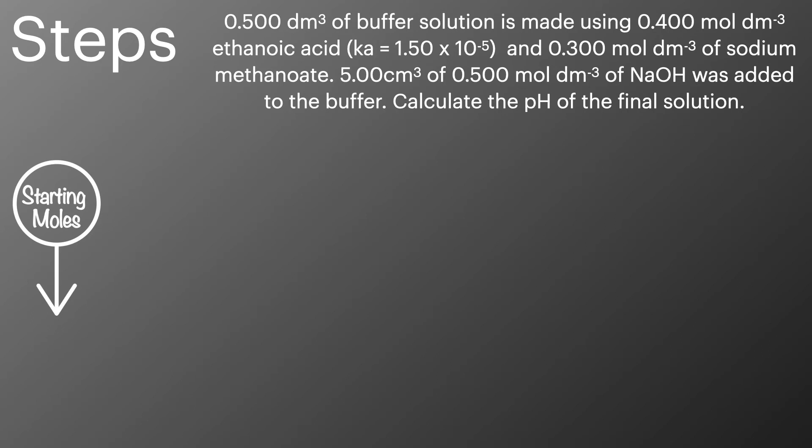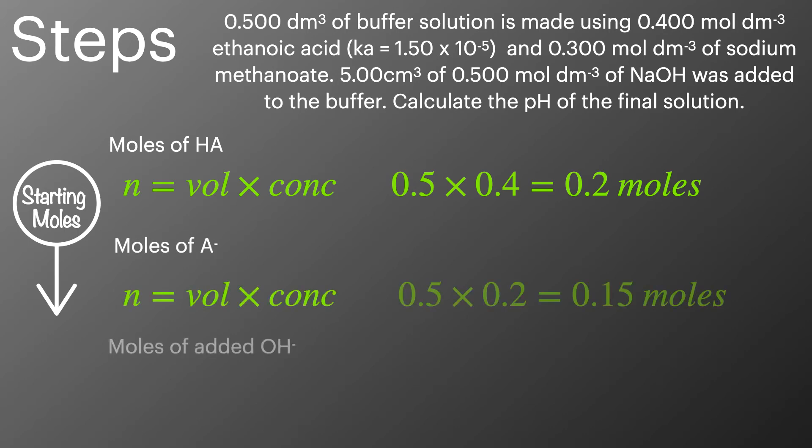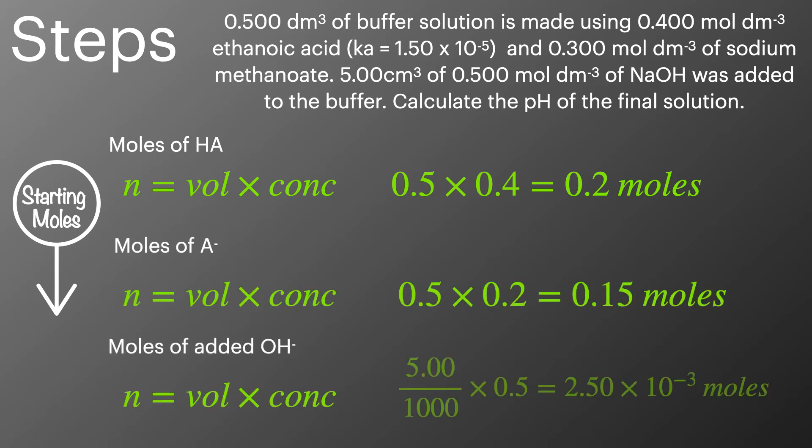The first thing we'll do is calculate the starting moles. To do that we'll work out the moles of HA, the moles of A-, and the moles of hydroxide, all using the number of moles equals volume times concentration equation. Making sure that we remember that when we've got a value in cm³ we need to convert it to dm³ by dividing by a thousand.